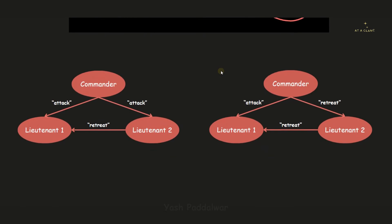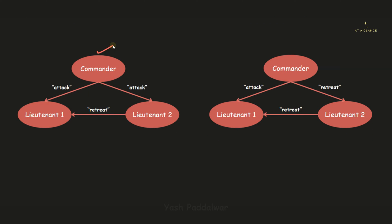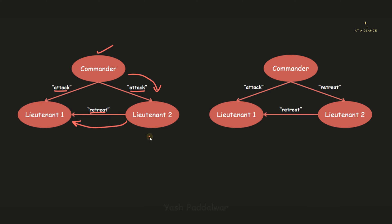Let's look at the different cases. In the first case, there is a commander and two lieutenants. Lieutenants act as higher authorities who agree to the decision made by the commander. The commander passes the message to both lieutenants that we need to attack. However, lieutenant 2 sends a message to lieutenant 1 saying we need to retreat — that means surrender. The commander said attack, but lieutenant 2 says retreat, so in this case lieutenant 2 is the culprit — the traitor.